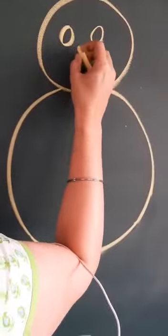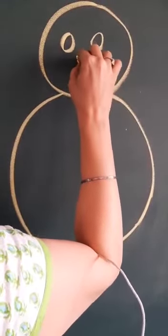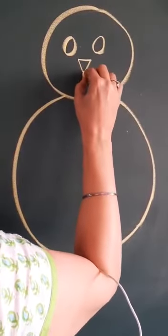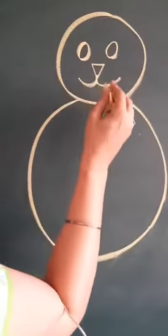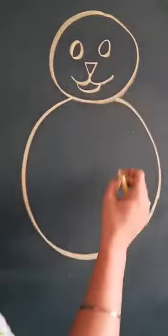Then here, make a slanting line. Nose ke liye slanting line. Then here, make one small standing line and take a turn. And take a turn. Now, join it with the curve.